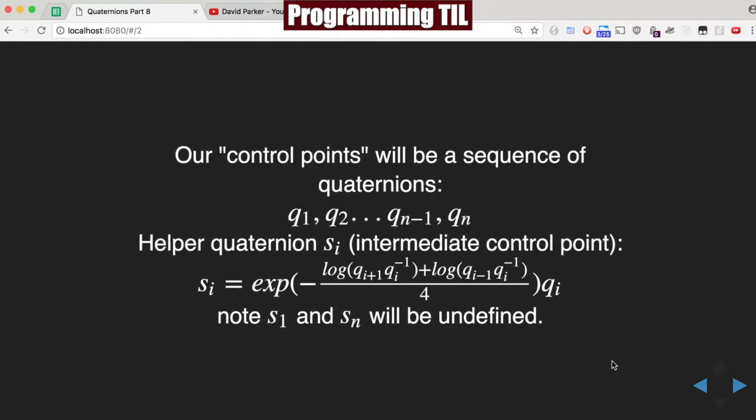So we're going to have control points between the quaternions, and the way they're going to be used is based on the quads before and after the ones that we're checking. So if we have Q1, Q2, all the way up to N, we'll have this helper quaternion SI which will be in between, which is defined by this formula here.